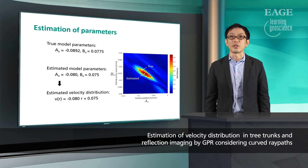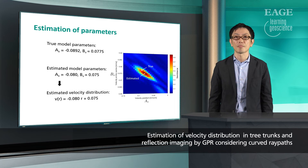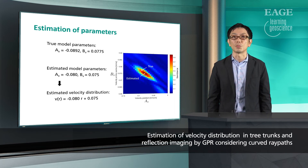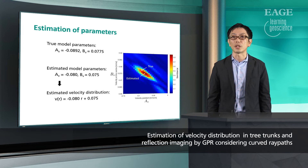By calculating with various model parameters, we can obtain the distribution of semblance value with respect to the parameters A and B. The white circle shows the true model parameters. And the maximum semblance value is obtained at the white cross, which indicates minus 0.08 and 0.075. These are close to the real values, so we obtain the modeled velocity distribution as shown at the bottom.